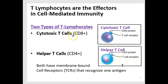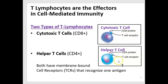Cytotoxic T cells we also call CD8-positive cells, because they have a protein on their surface called a CD8 protein. CD stands for clusters of differentiation — someone named this the eighth protein that differentiated, so CD8. Helper T cells, by contrast, are CD4-positive cells, so they have a CD4 protein on their surface.